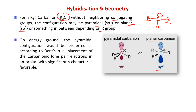In planar carbanion we have sp2 hybridization — carbon uses three sp2 hybrid orbitals to form bonds with three R groups, and the pure p orbital carries the lone pair electrons. In pyramidal carbanion, carbon uses three sp3 hybrid orbitals for bond formation with three R groups, and the fourth sp3 orbital carries the lone pair electrons.